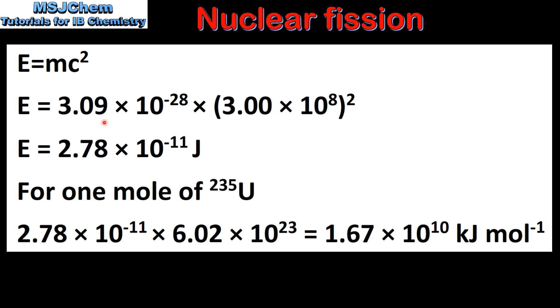So we multiply our mass defect in kilograms by the speed of light squared which gives us 2.78 times 10 to the negative 11 joules. This is the energy released during the fission of one atom of uranium-235.